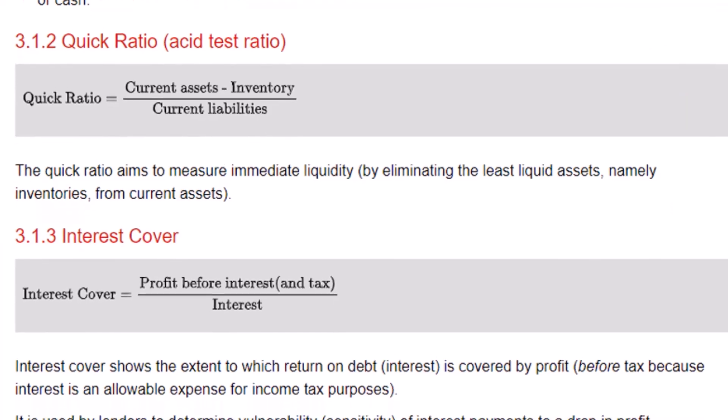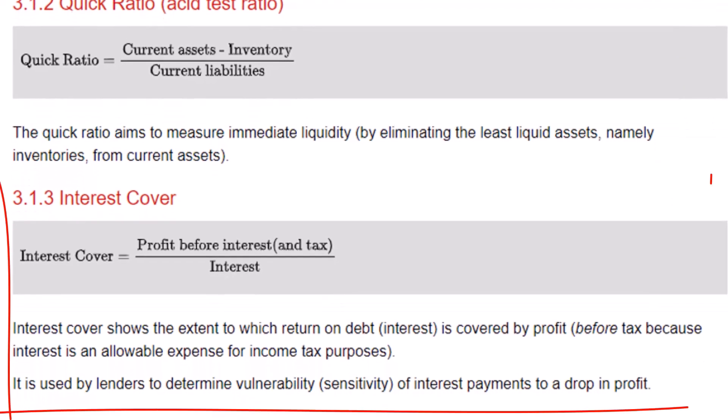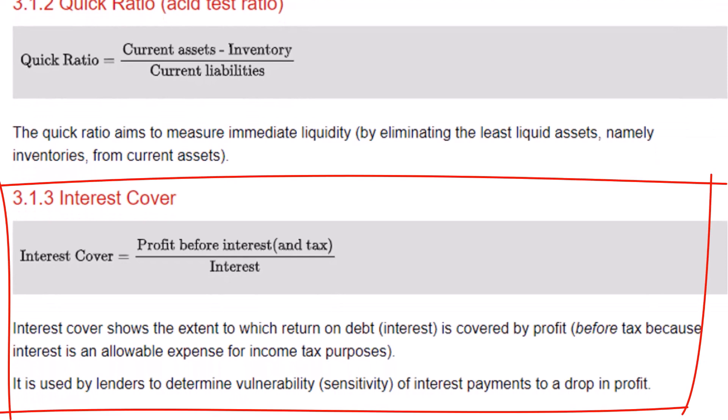We can also look at interest cover. Here we measure how many times a company can pay its interest from its operating profit — its profit before interest and tax. This will be especially important to lenders, and they'll use it to measure a company's financial risk as well.